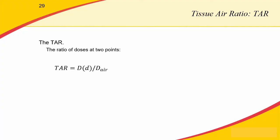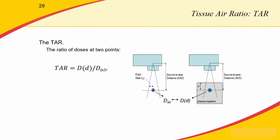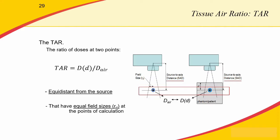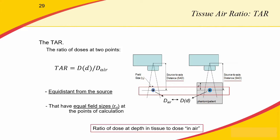Let's start with the tissue air ratio, or TAR. It's a bit outdated and probably not used in the clinic anymore, but the concept is very relevant to all the other dose output ratios we'll discuss. For the TAR, we measure the dose in air at a given SAD, then place the ion chamber inside a phantom and measure the dose at a given depth, keeping exactly the same distance from the source in both cases and the same field size at the point of measurement. Essentially, the TAR is the ratio of dose in tissue at a given depth to dose in air at the same distance from the source.